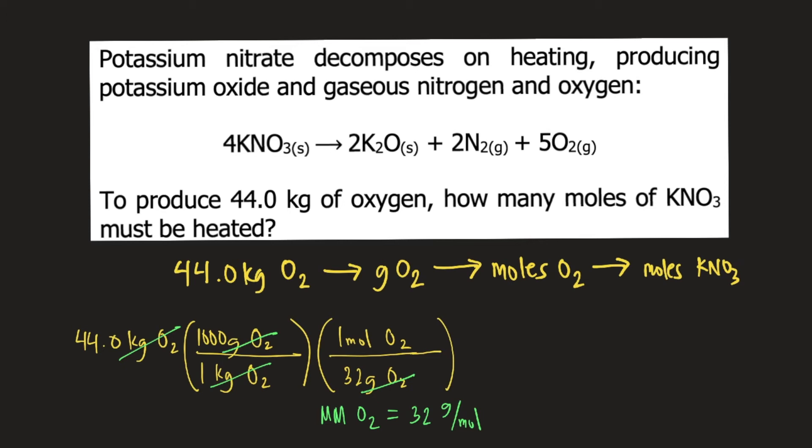Lastly, we need to convert this into moles of potassium nitrate. How do we do this? We look at the balanced reaction. According to the balanced chemical reaction, 4 moles of potassium nitrate produces 5 moles of O2. Let's put that into our conversion.